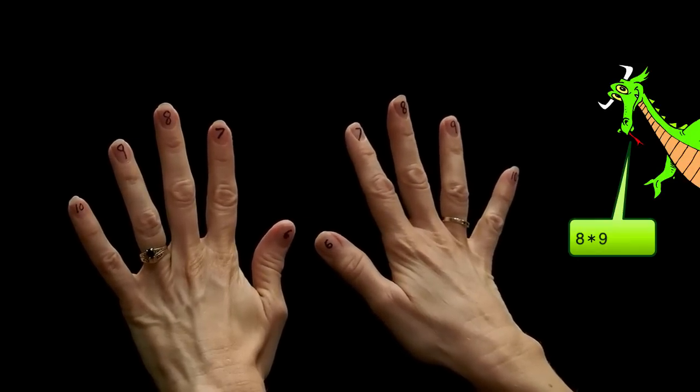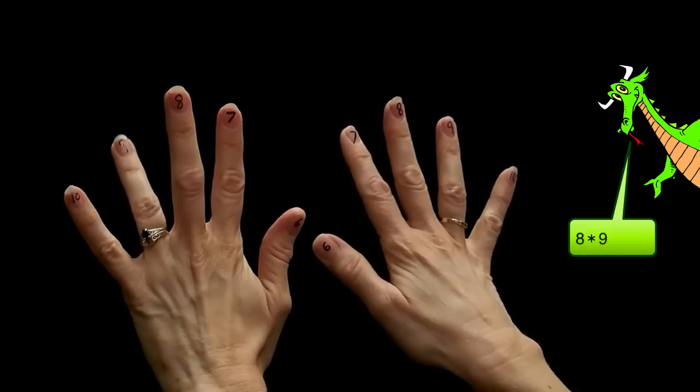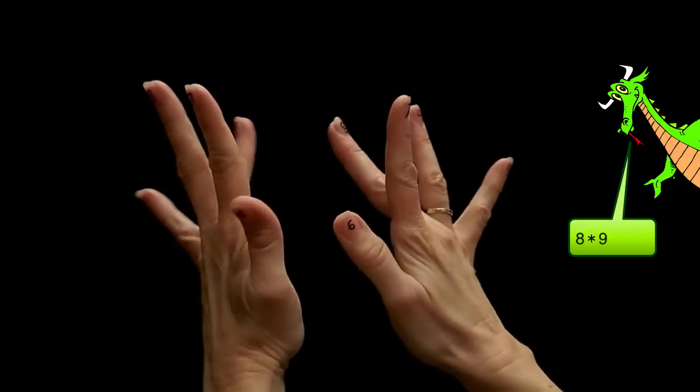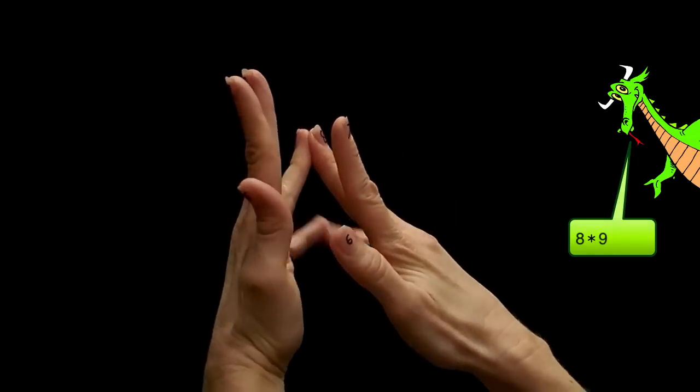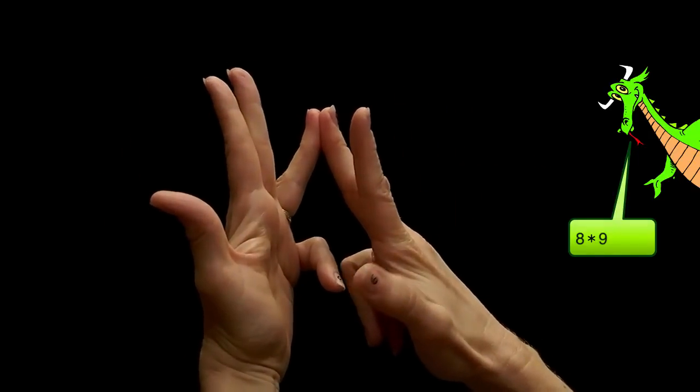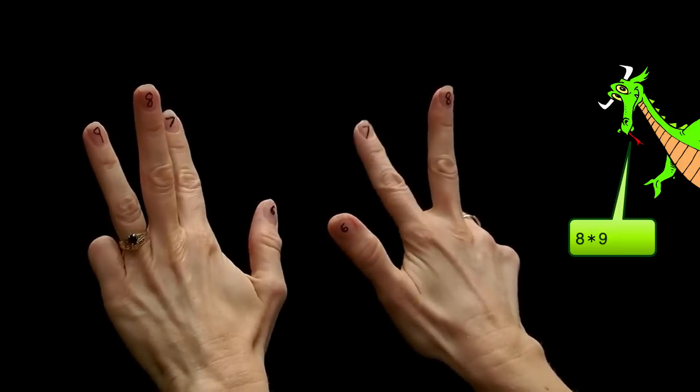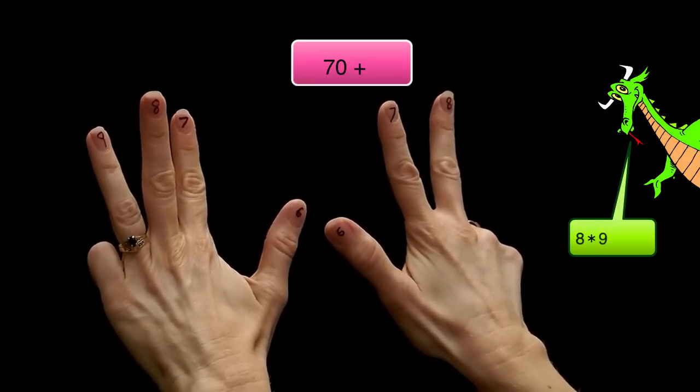Now we're going to try the problem 8 times 9. I touch my 8 finger and my 9 finger together. The fingers behind them curl down to the pinkies. Here I've got 7 fingers up so it's 70.